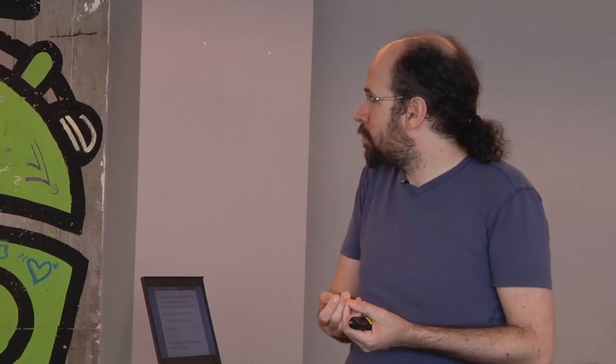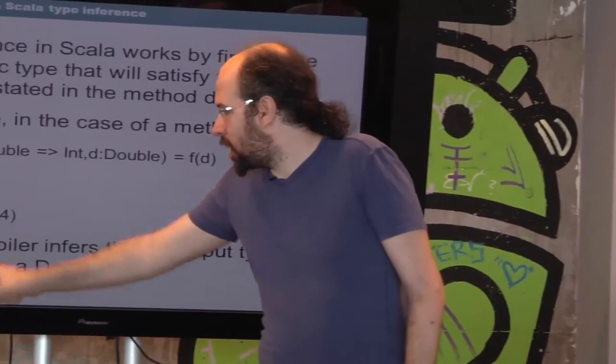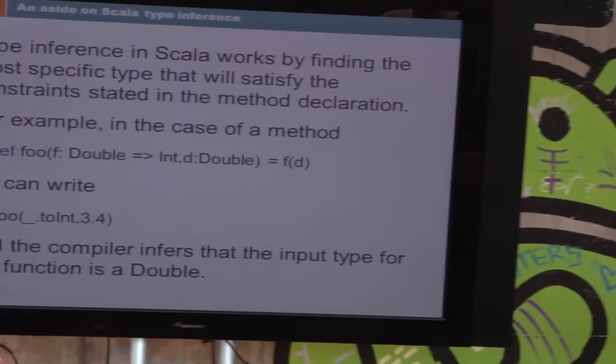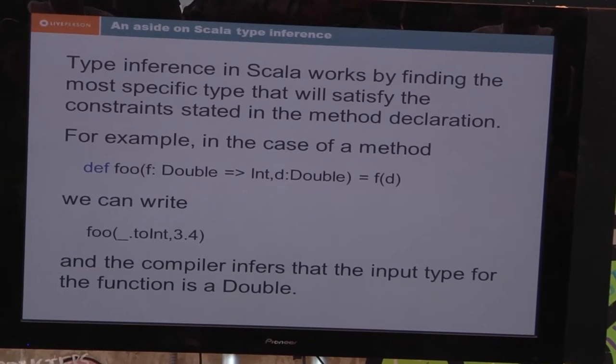How does type inference in Scala work roughly? It looks at the constraints you stated, tries to solve equations for them. If it can solve the constraints, it will compile. If it can't, it's going to say: I do not know what this is, you have to tell me. Usually, that's a good sign that you're doing something wrong. For example, I did not have to write that this is a function from double to int, because that's what the compiler expects — I told it that's what to expect.